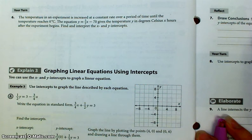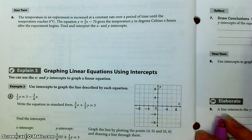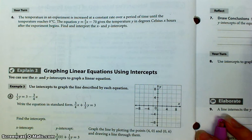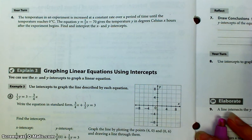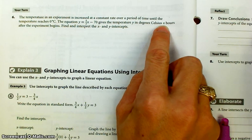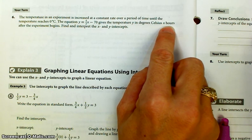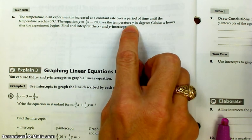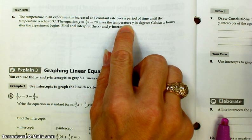Number 6 on page 210 says the temperature in an experiment is increased at a constant rate over a period of time until the temperature reaches 0 degrees Celsius. The equation y = 5/2x - 70 gives the temperature y in degrees Celsius x hours after the experiment begins. So, find the x and y-intercepts. All right, so first of all, I'm recognizing that my x, my independent variable, is hours. And my y, my dependent variable, is time.